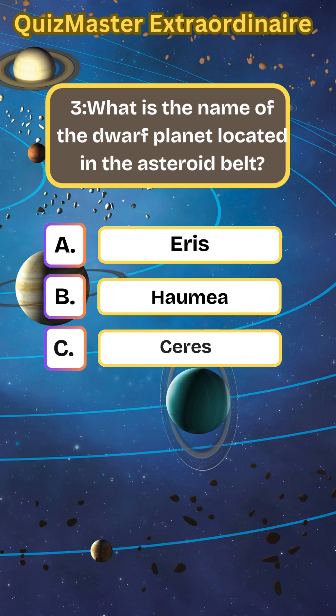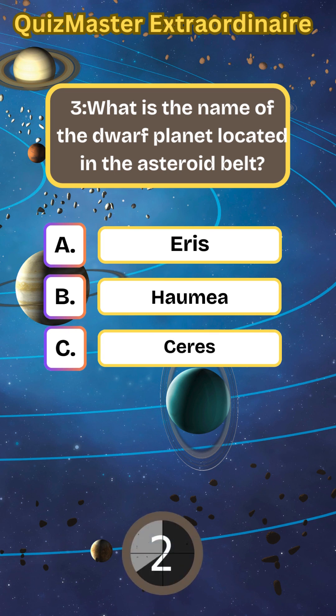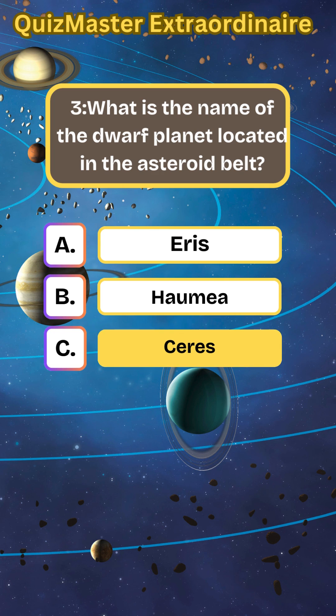What is the name of the dwarf planet located in the asteroid belt? Ceres.